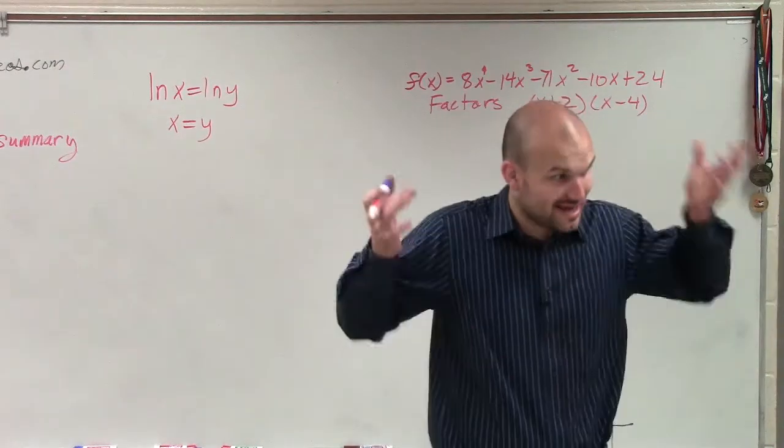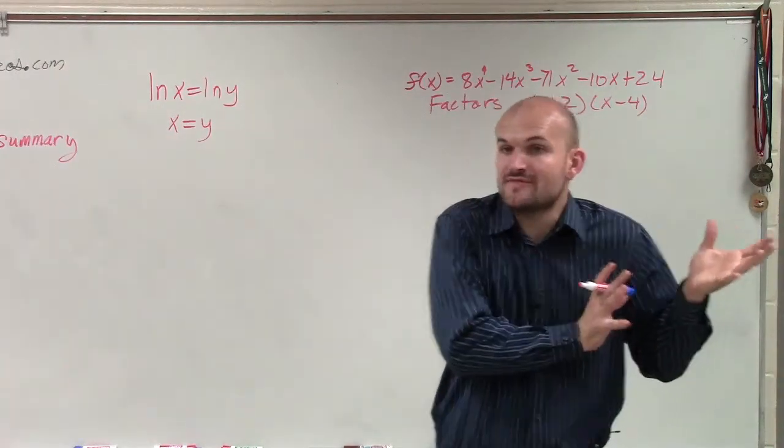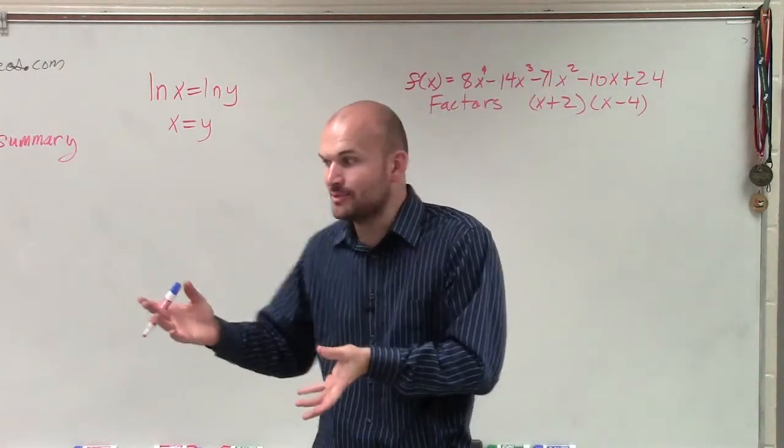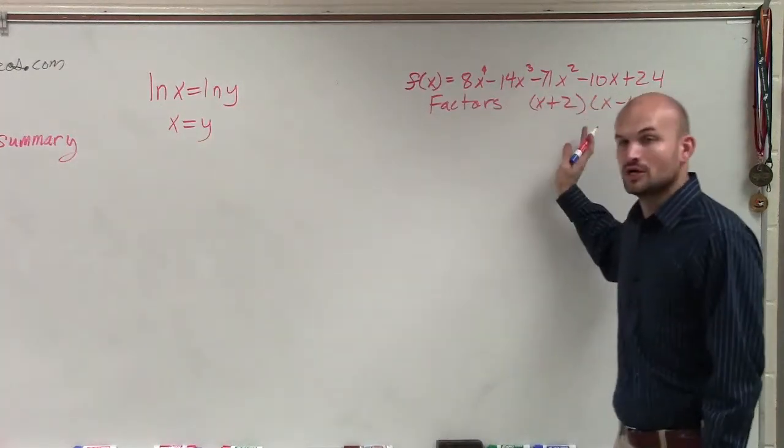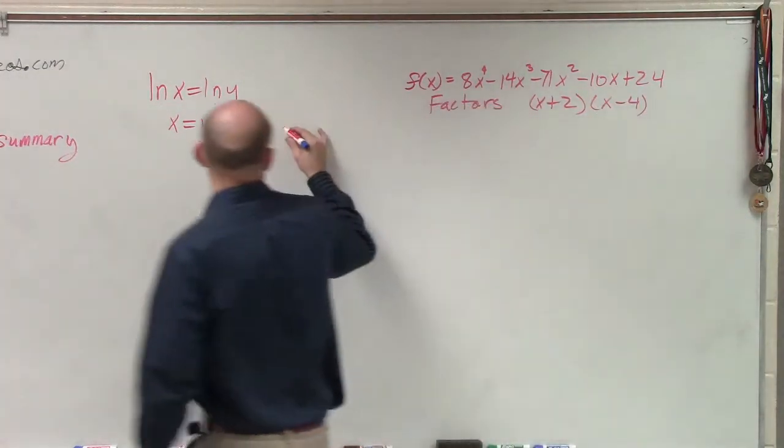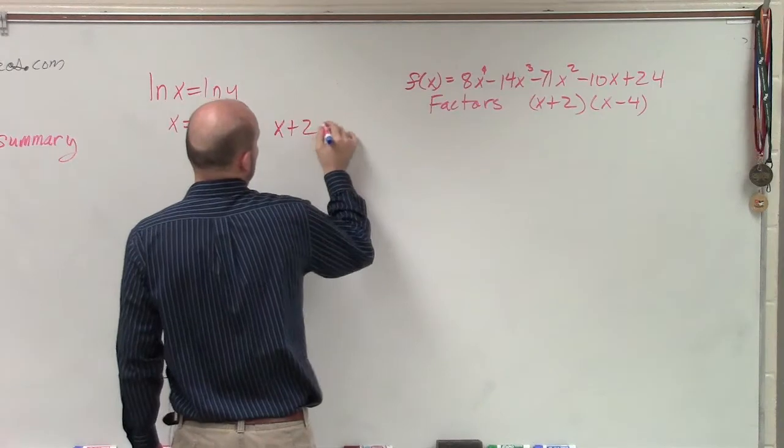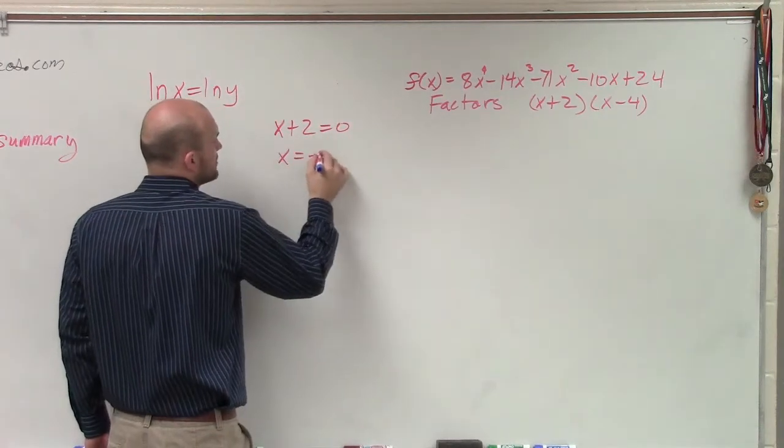Right? If I say, hey, here's the factors, we know that those factors evenly divide into the polynomial. Now, I don't really want to use long division. So what I could do is, again, I can take my factor, set it equal to 0 to find the 0.